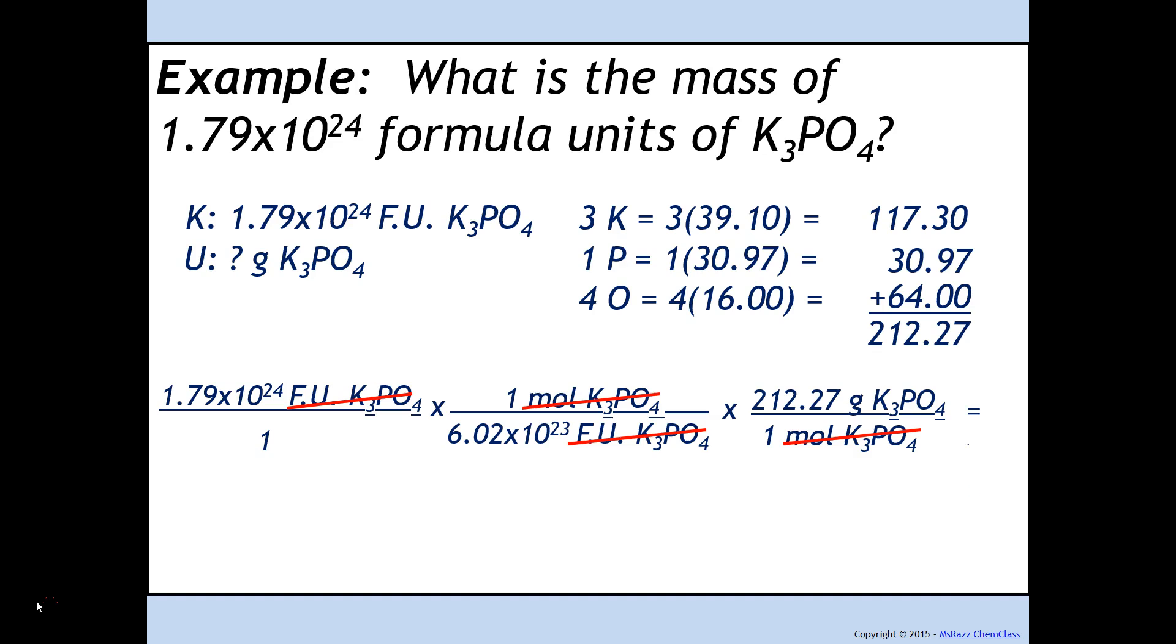When you solve this, usually the number of sig figs is based off of the number that you have in your known. So since there are three in the known, there are going to be three sig figs in our answer. And that's where we get 631 grams of potassium phosphate.